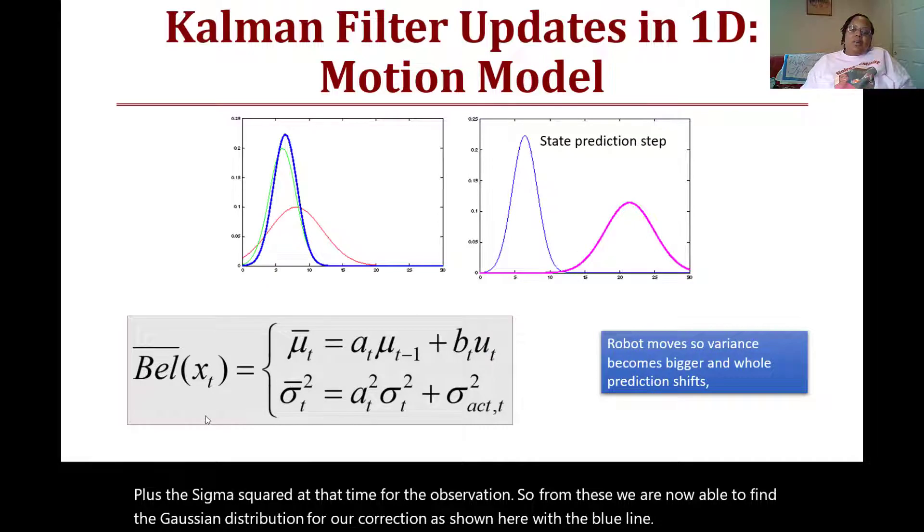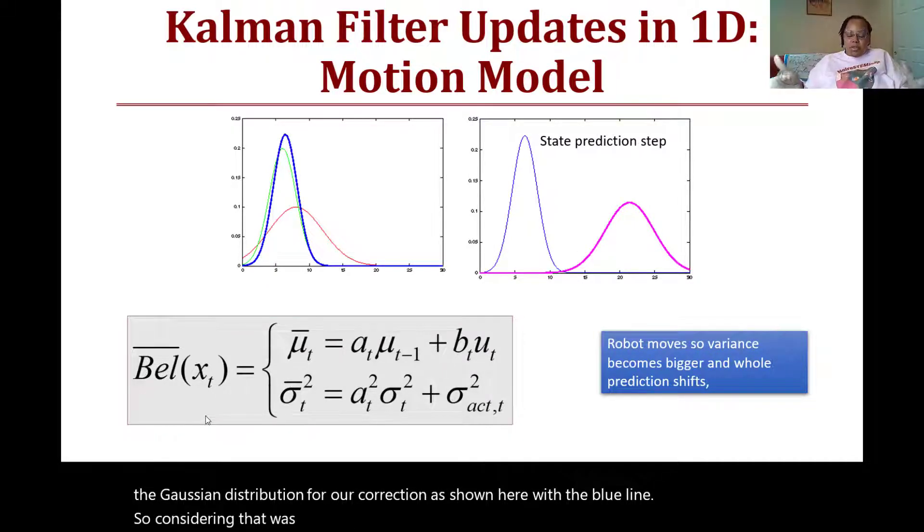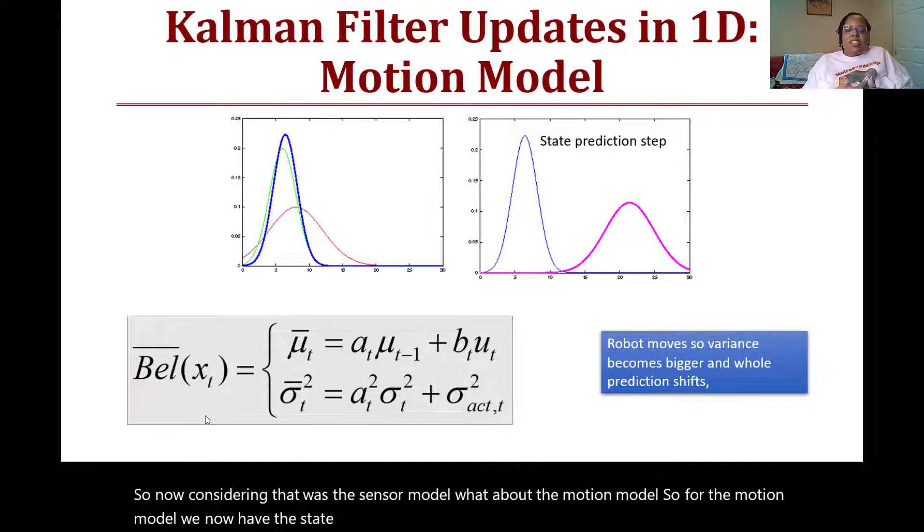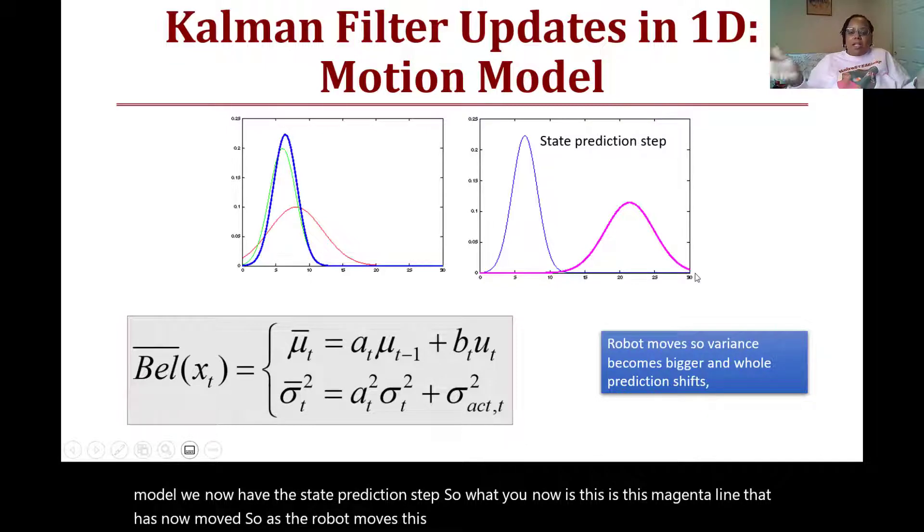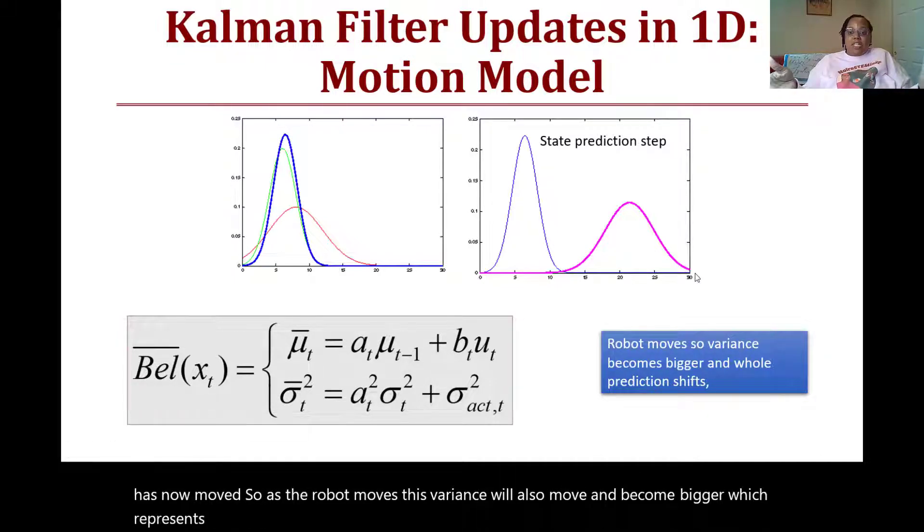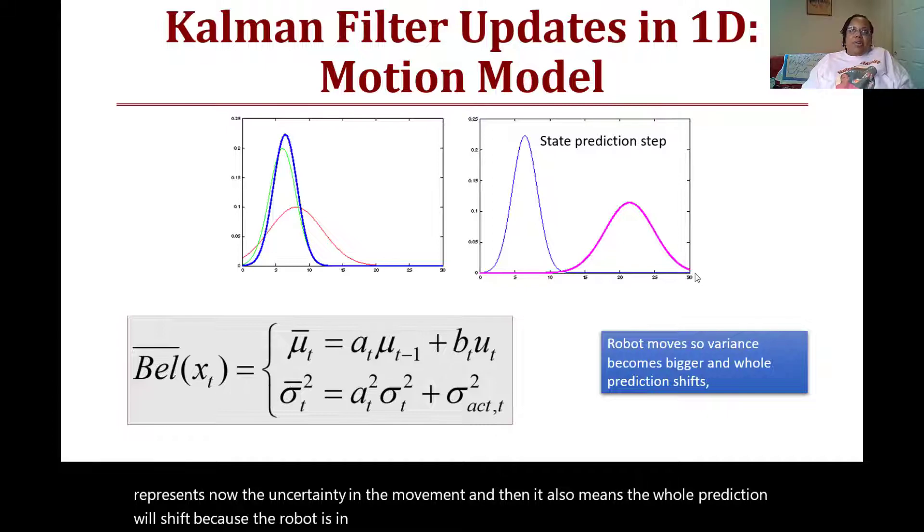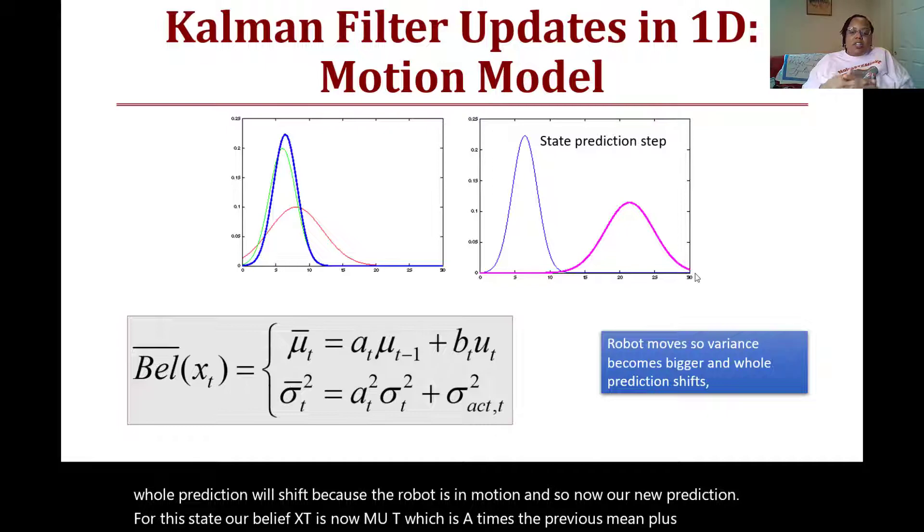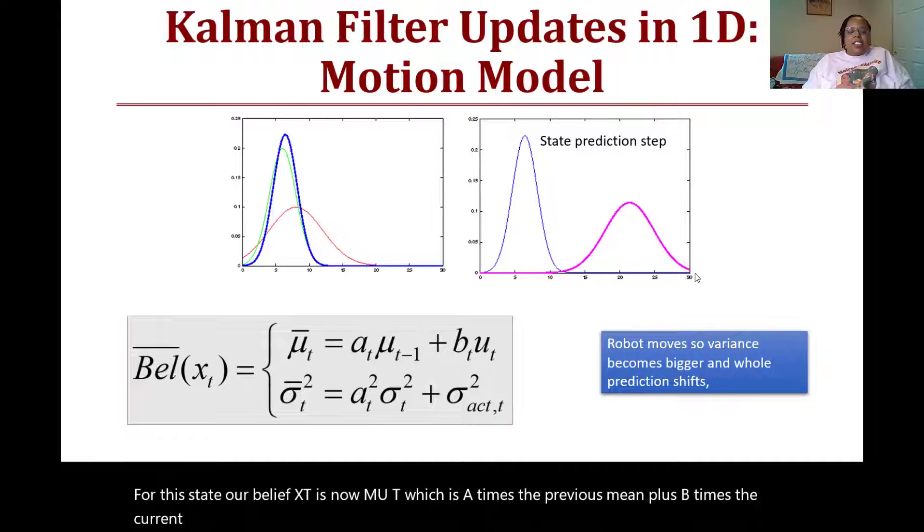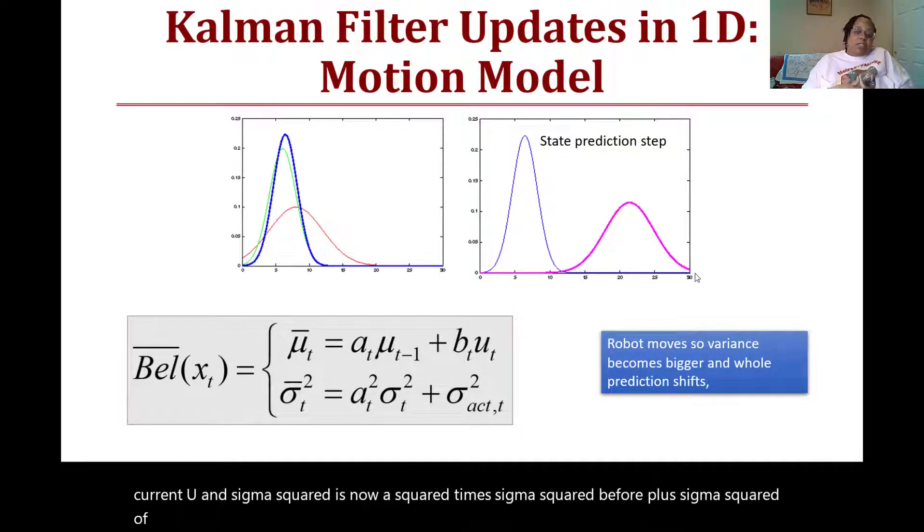Now considering that was the sensor model, what about the motion model? For the motion model, we now have the state prediction step. What you now see is that magenta line that has now moved. As the robot moves, this variance will also move and become bigger, which represents now the uncertainty in the movement, and it also means the whole prediction will shift because the robot is in motion. Our new prediction for this state or belief x_t is now μ_t, which is A times the previous mean plus B times the current u, and σ² is now A² times σ² before plus σ² of the action of moving squared.